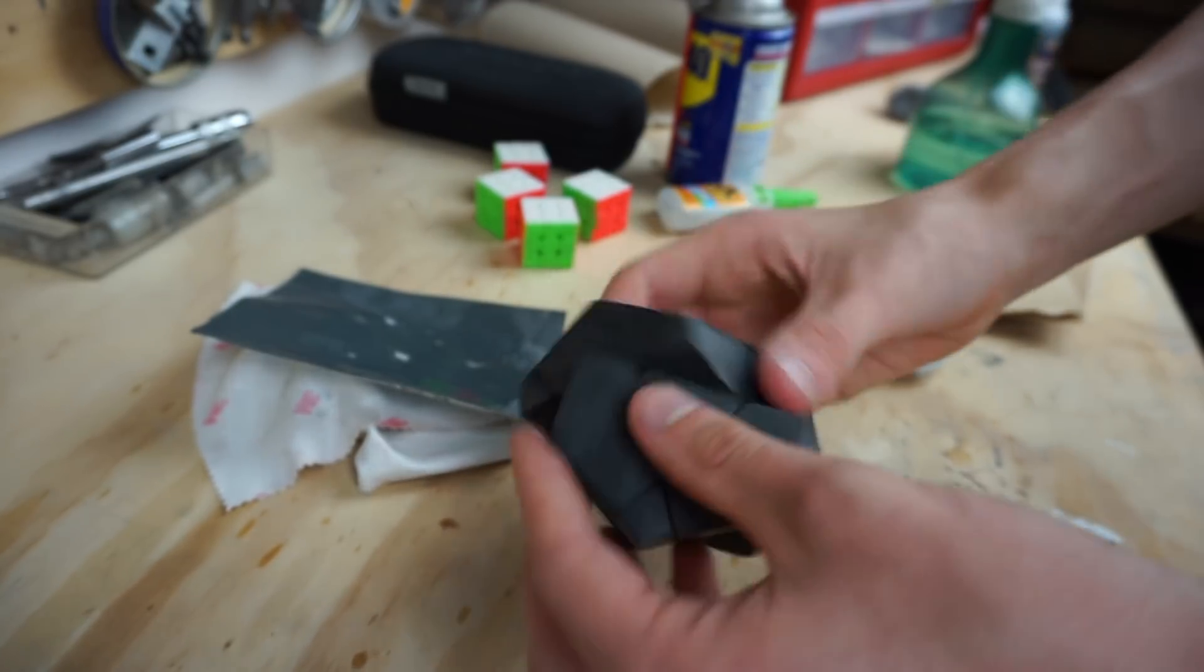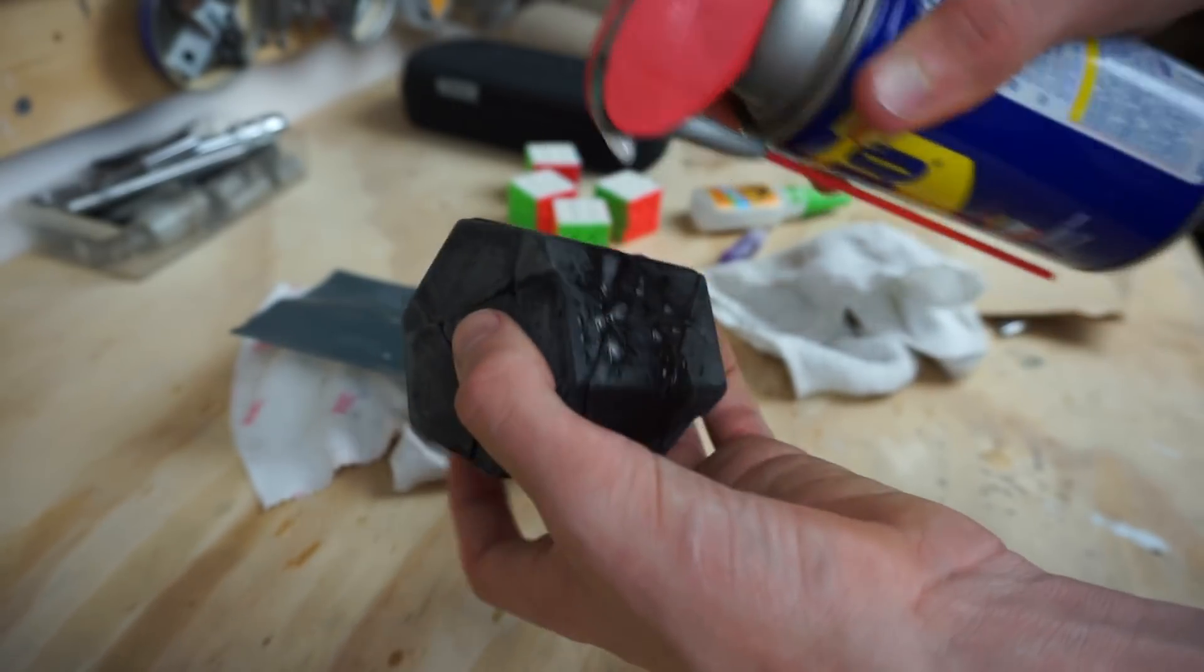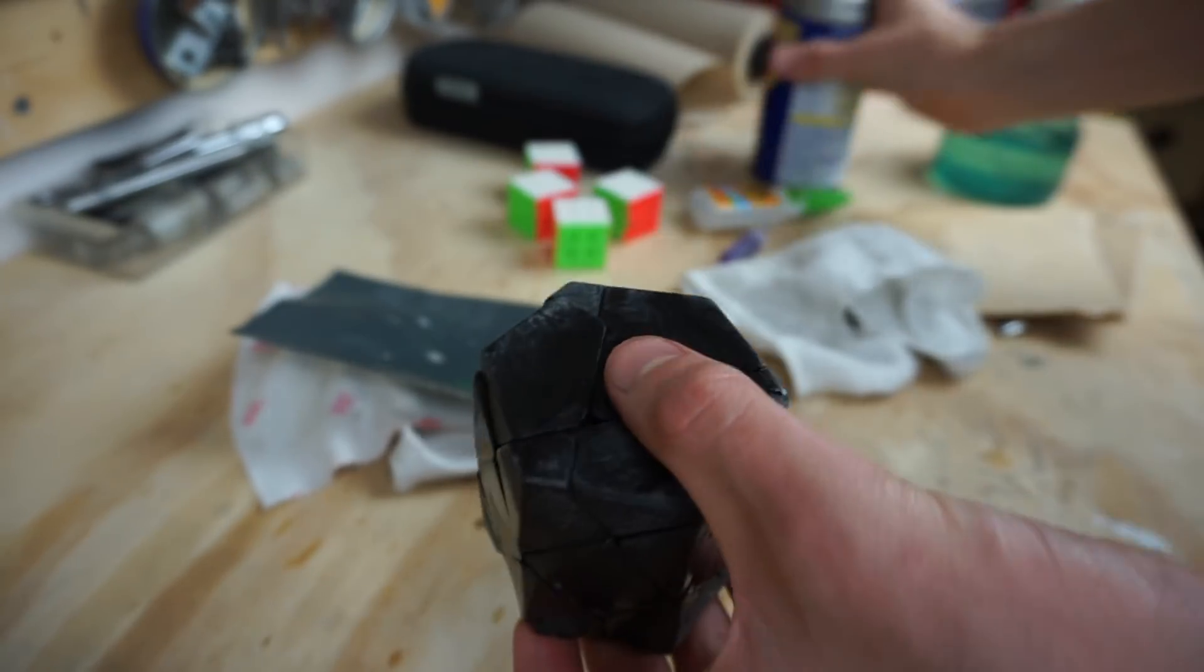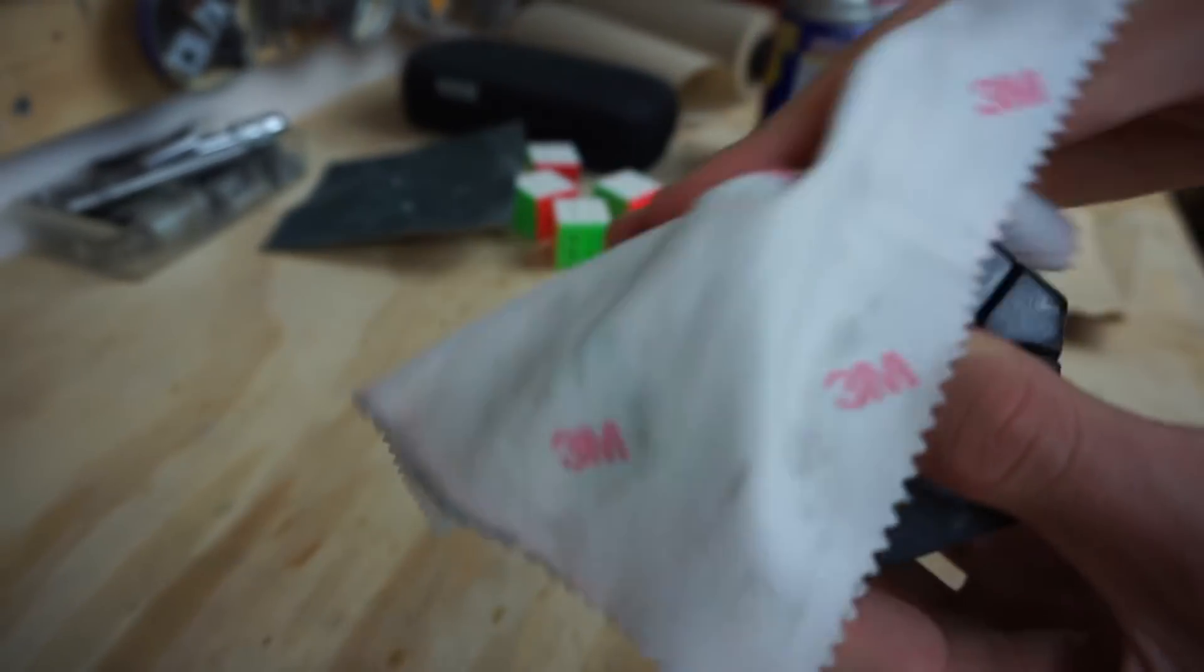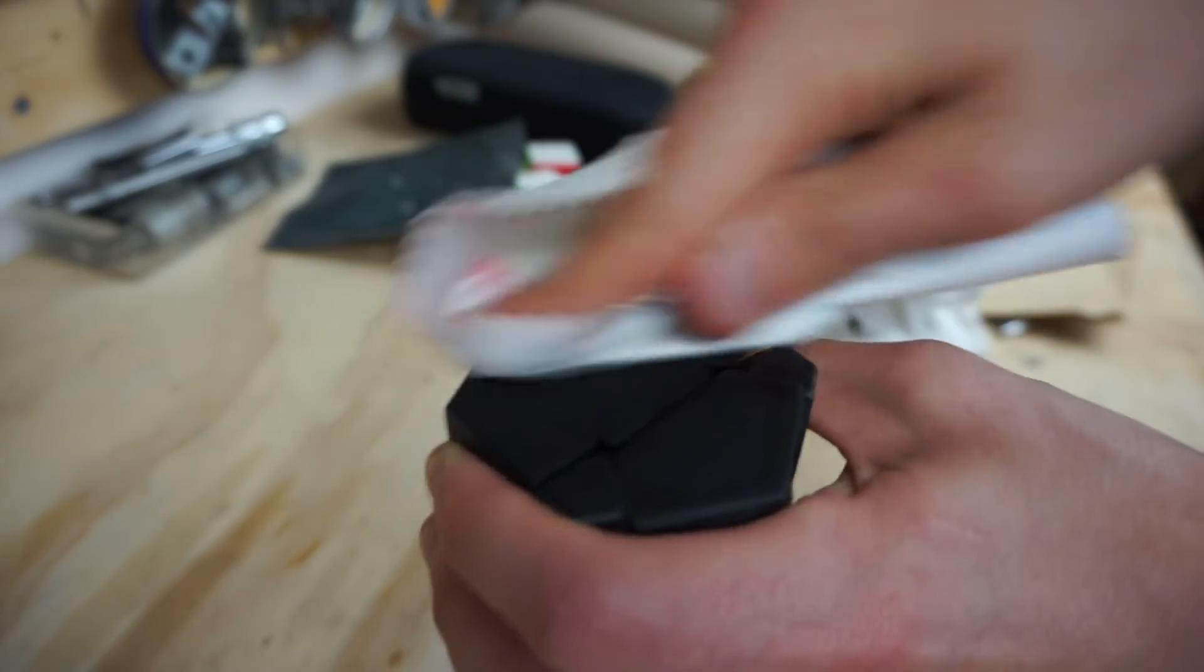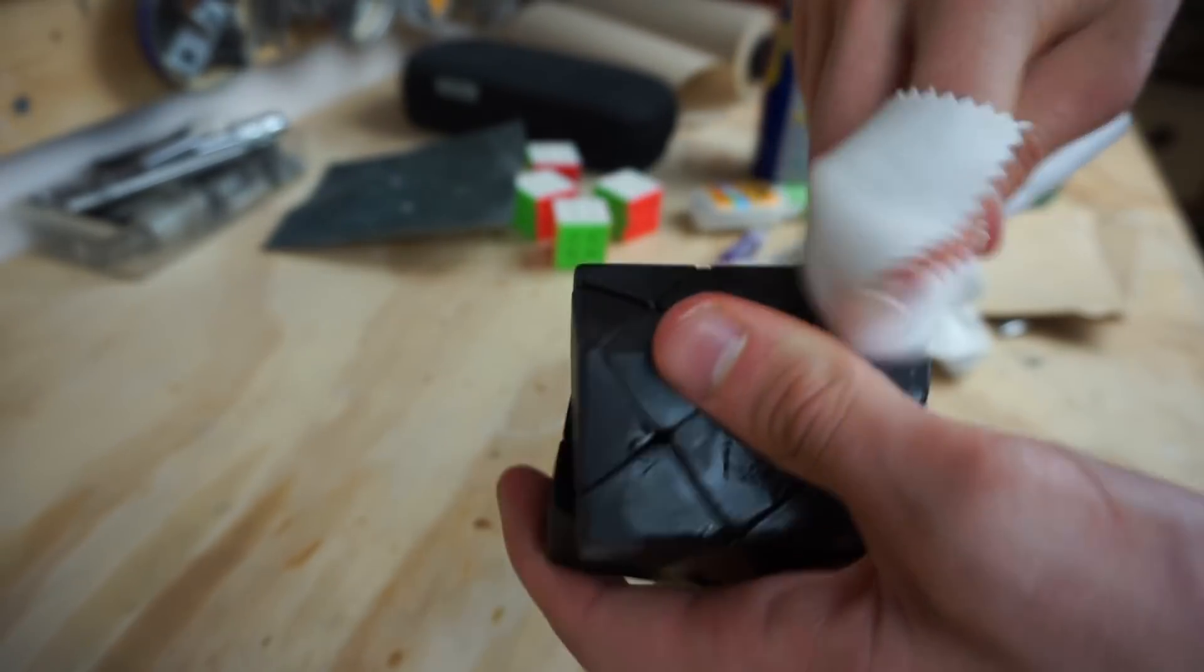When you just sand the puzzle like I did, it leaves the puzzle really gray. So I like to use WD-40 to stain the exterior. Now don't use WD-40 as a lubricant because it'll totally destroy the inner puzzle mechanism, unless you use the silicone version. There is a silicone version of WD-40 that you can use for the interior of the puzzle. But this WD-40 is just used for staining the exterior of the puzzle.